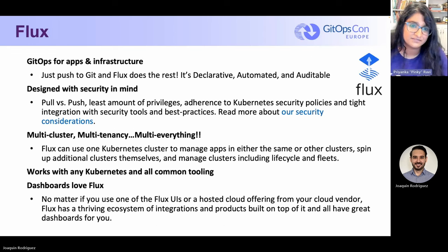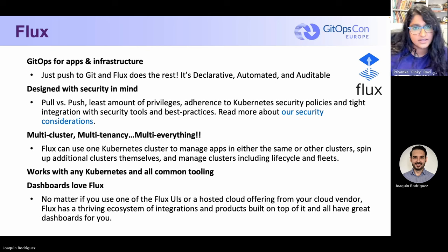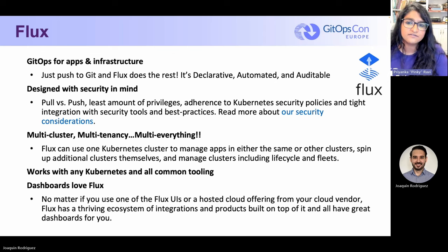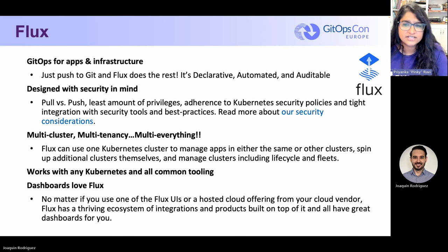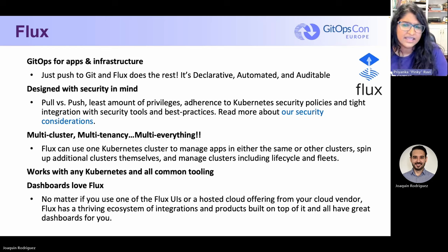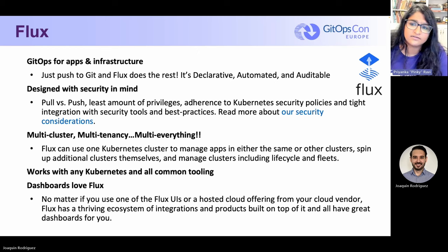Flux is GitOps for apps and infrastructure — you just push to Git and Flux does the rest. It's declarative, automated, and auditable. Flux and Flagger deploy apps with canaries, feature flags, and A/B rollouts. Flux can manage any Kubernetes resource, and infrastructure and workload dependency management is built in. Flux can even push back to Git for you with automated container image updates, image scanning, and patching. You can describe the entire desired state of your system in Git — apps, configuration, dashboards, monitoring, and everything else — using YAML to enforce conformance.